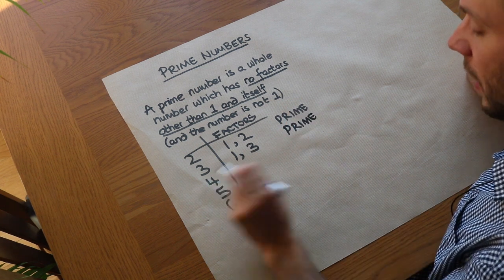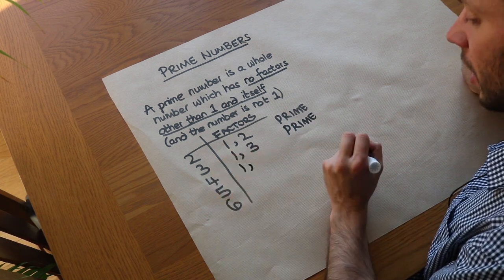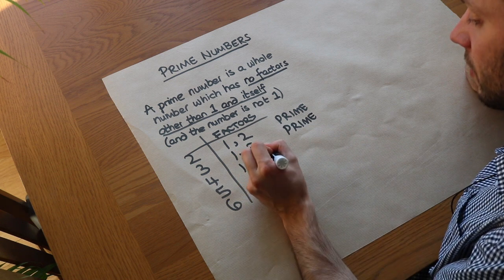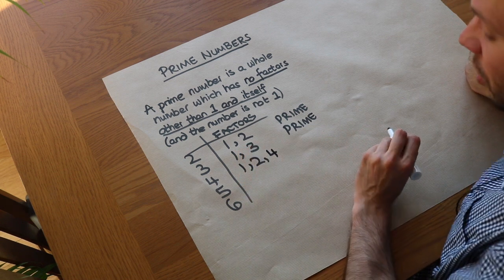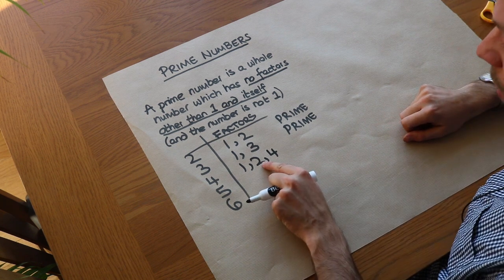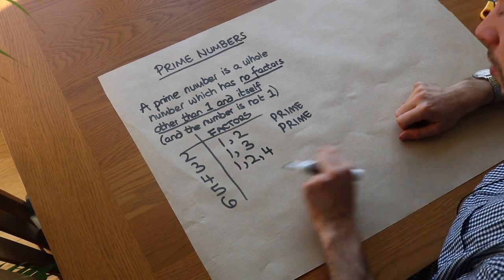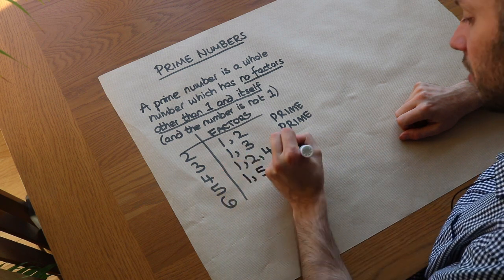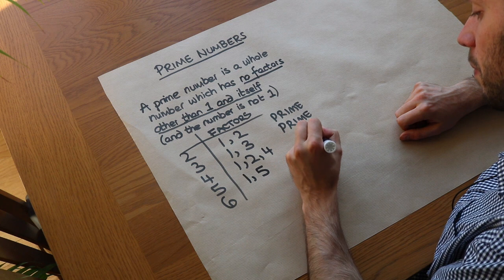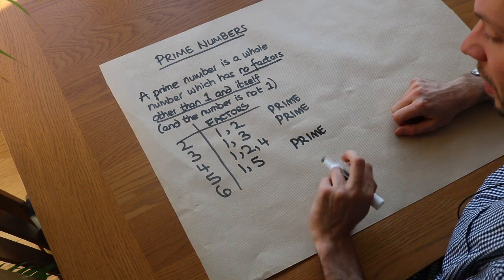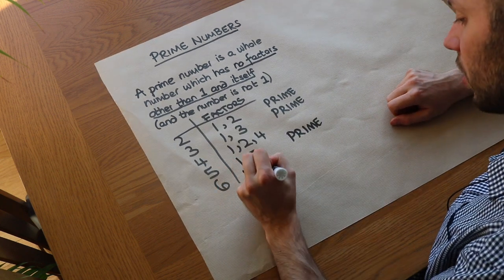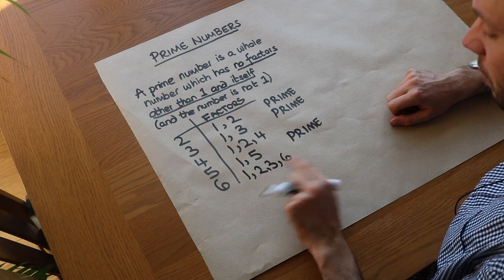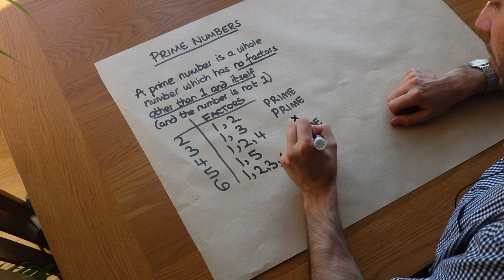What about four? Well, one goes into it, and two goes into four — four can be divided by two. Four itself also goes into four. Four is not prime because it has a factor which is not one or itself. Five's factors are just one and five, so that's prime. Six has factors one, two, three, and six — it has factors other than one and itself, so it's not prime.